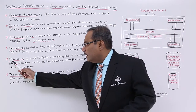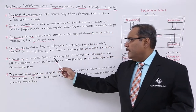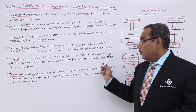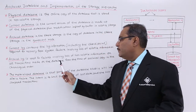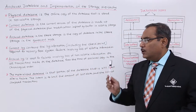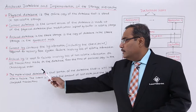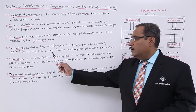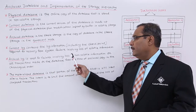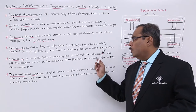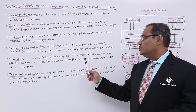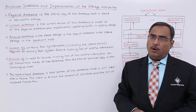The archival log is used for failures involving loss of non-volatile information, covering all transactions made on the database from the time of the archival copy in chronological order. So the archival log is required during failures involving loss of non-volatile information, recording all transactions on the database in chronological order.